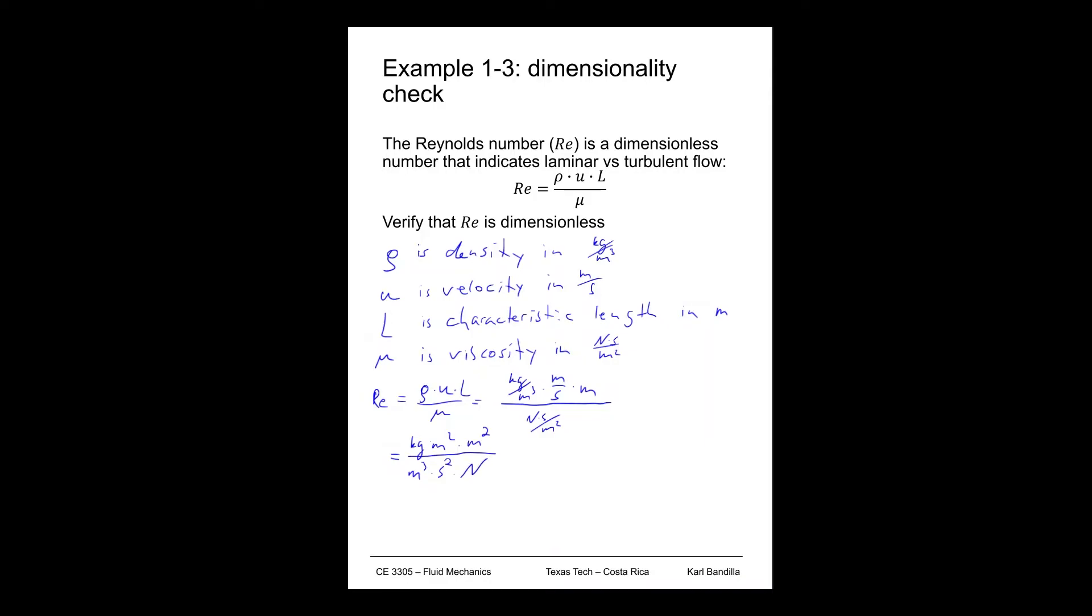All right, so what can we do? Well, we can combine the top there to be kilograms times meter cubed. We can do meter cubed times second squared. And then newton, of course, are just kilograms times meters divided by second squared.